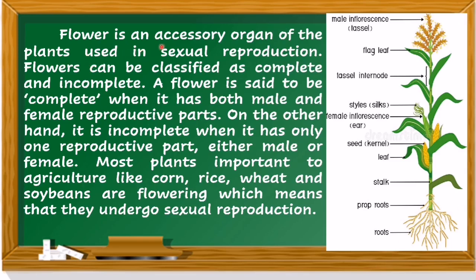A flower is an accessory organ of the plant used in sexual reproduction. Flowers can be classified as complete and incomplete. A flower is said to be complete when it has both female and male reproductive parts. On the other hand, it is incomplete when it has only one reproductive part, either male or female. Most plants important to agriculture, like corn, rice, wheat, and soybeans, are flowering, which means they undergo sexual reproduction.